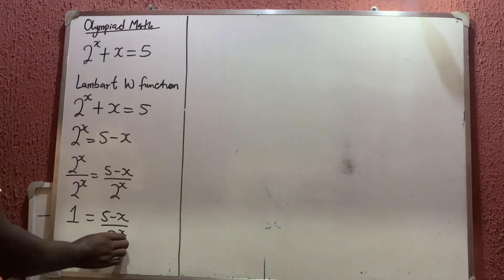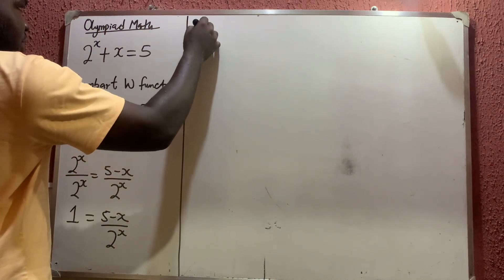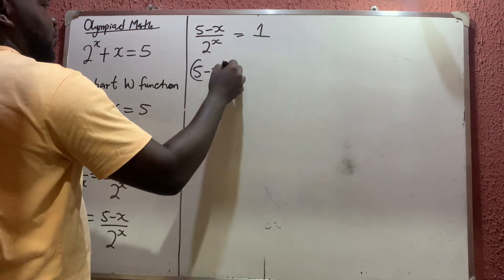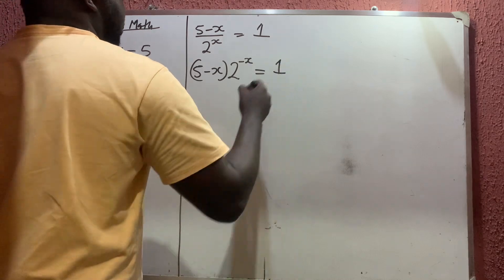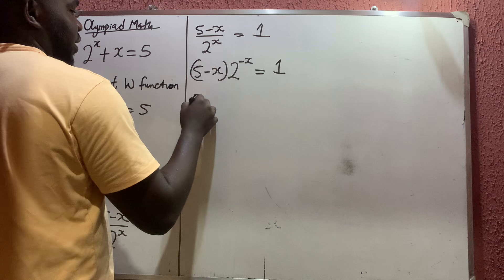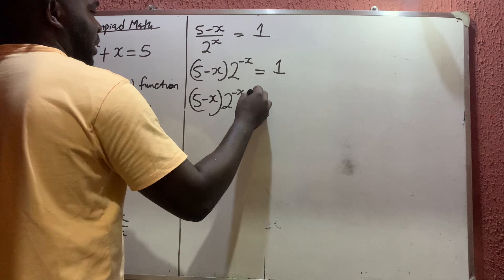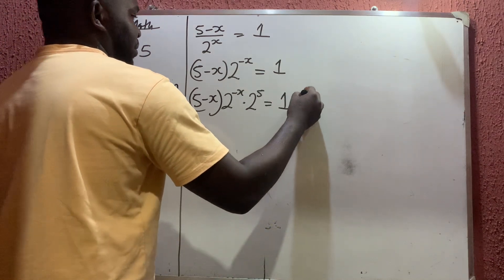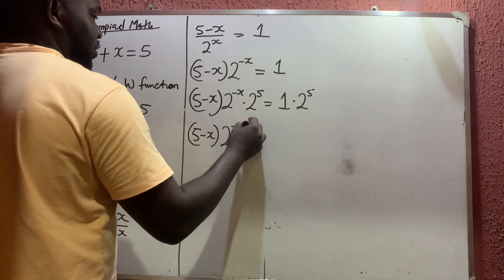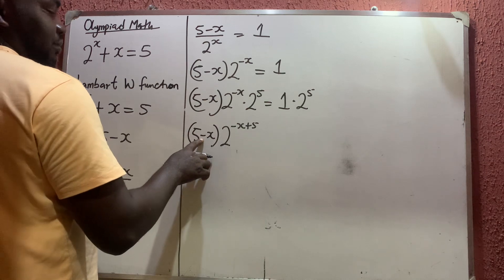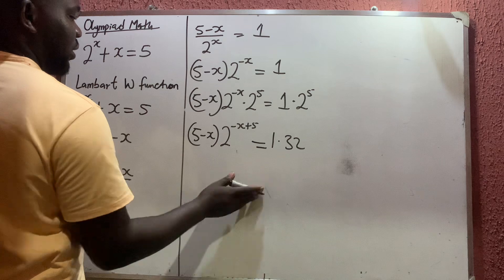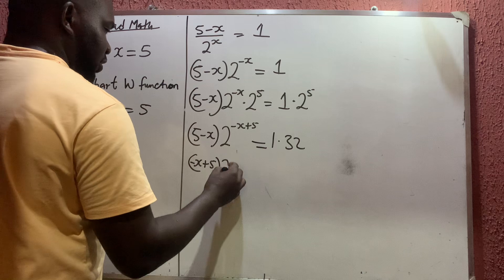According to the law of indices, since the denominator is coming up it becomes negative power. So rewriting: 5 minus x times 2 raised to the power of negative x equals 1. I need to introduce 2 raised to the power 5, so multiplying both sides by 2^5 gives: 5 minus x equals 2 raised to the power of negative x plus 5, and that equals 32.